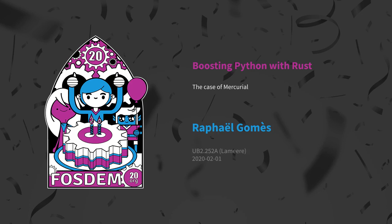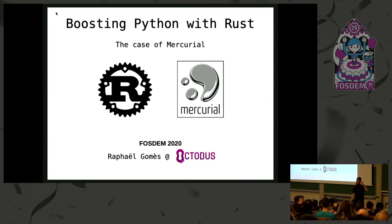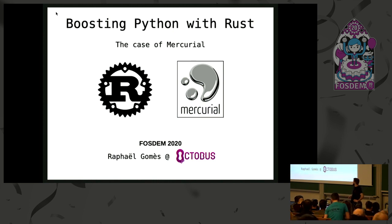Thank you for coming. My name is Rafael Gomez. I work at Octobus, a small consulting company specialized on Mercurial. I'm going to talk about how we interface Python and Rust within Mercurial, what the challenges are that we face, how we fix them, and how we didn't yet for some.